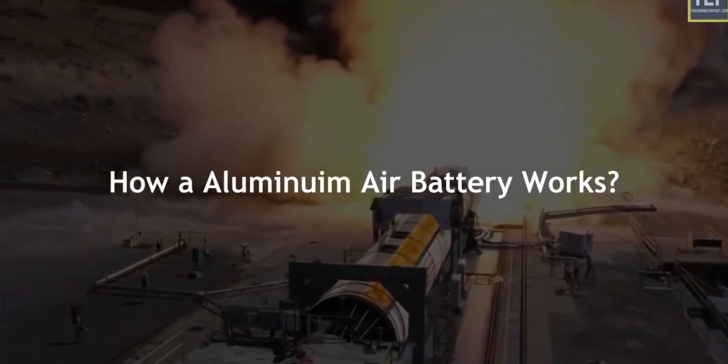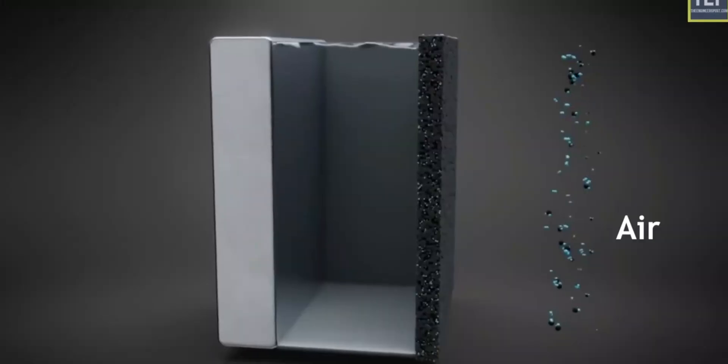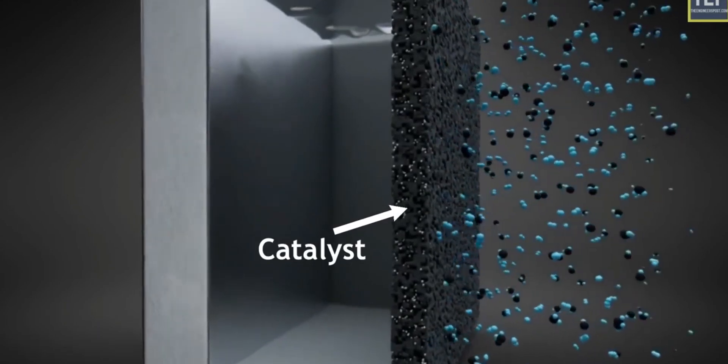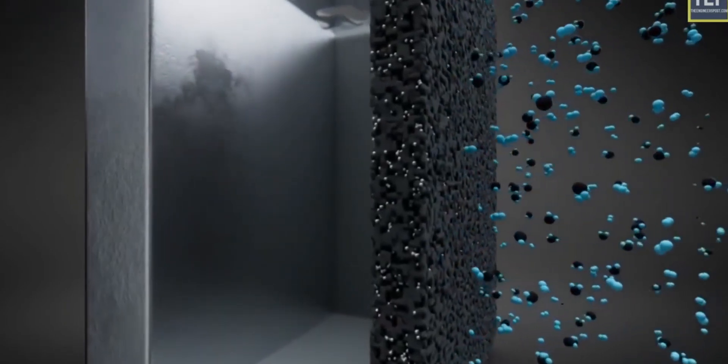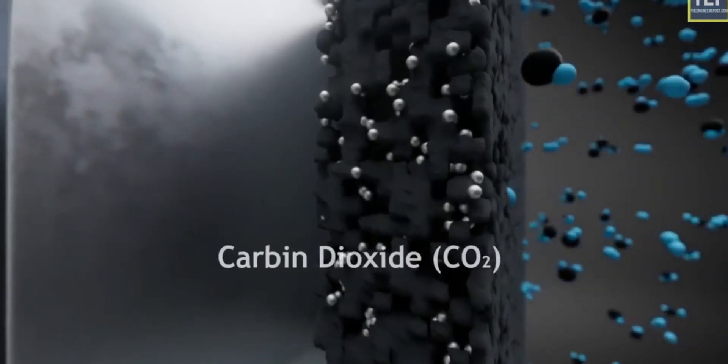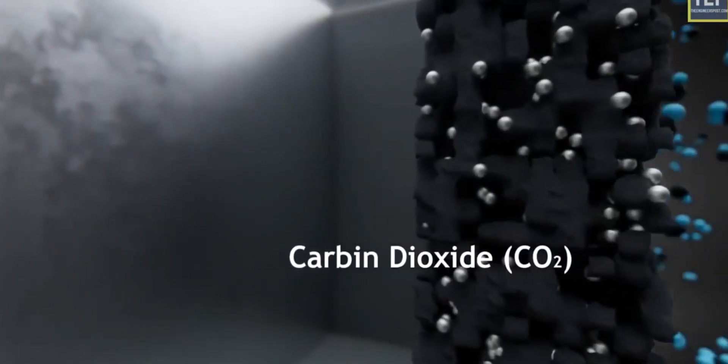Aluminum air batteries aren't actually batteries, to begin with. It resembles a fuel cell more now. Instead of holding a charge, they harness the natural processes when aluminum is exposed to air to produce energy. The batteries are made of plates of pure aluminum alloy as the anode, the negatively charged electrode.